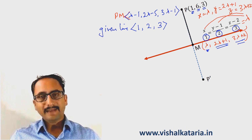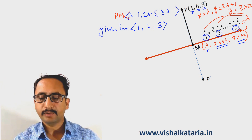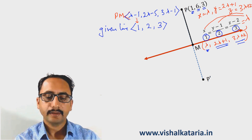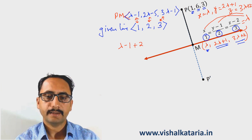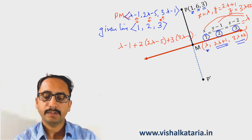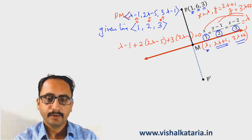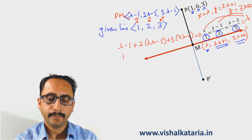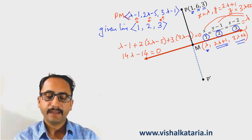We know that the given line is perpendicular to the line passing through PM, hence the dot product has to be 0. The dot product means the sum of respective products of DRs: (lambda minus 1) plus 2 times (2 lambda minus 5) plus 3 times (3 lambda minus 1) equals 0. Solving this equation gives 14 lambda minus 14 equals 0, which means lambda equals 1.